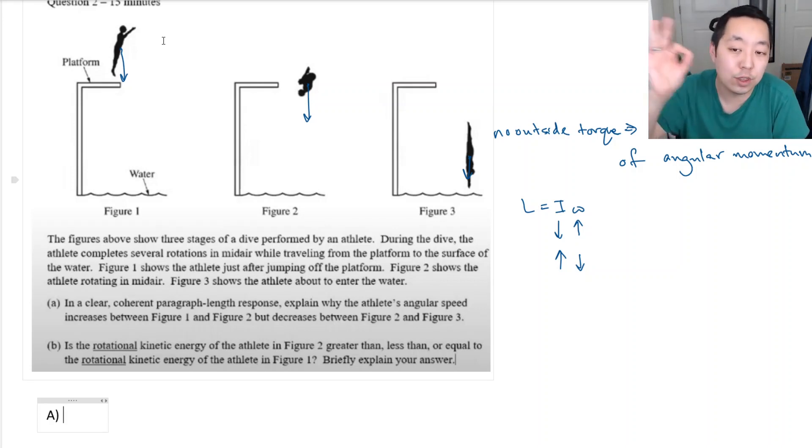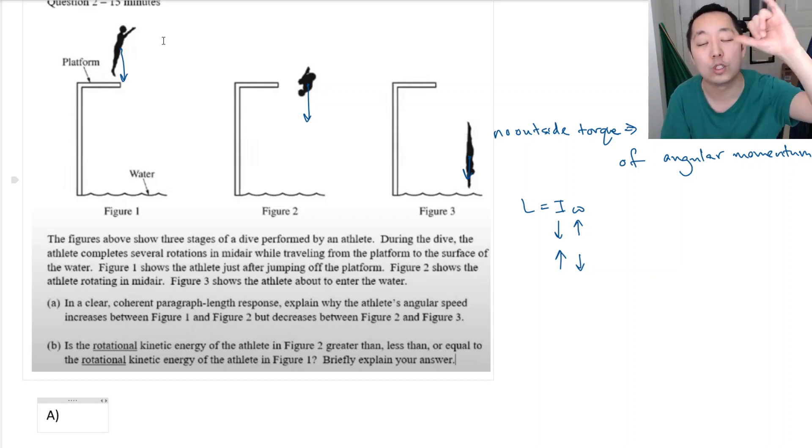Okay? And then between figure 2 and 3, he is now extending himself. So his rotational inertia now increases because his mass is now distributed under a larger radius. And thus, as I increases, his omega must decrease. So we need to put that all together into a paragraph.